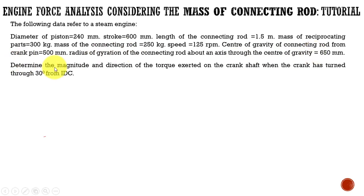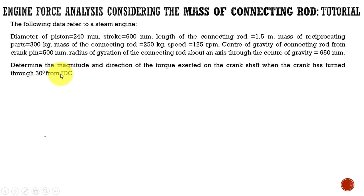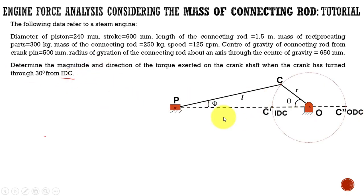Determine the magnitude and direction of the torque exerted on the crankshaft when the crank has turned through 30 degrees from inner dead center. There is no mentioning of whether the engine is horizontal or vertical, but from the reference to inner dead center, we can identify the given configuration corresponds to a horizontal reciprocating engine.